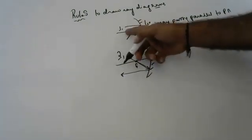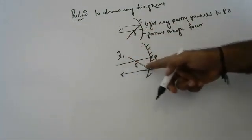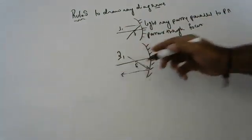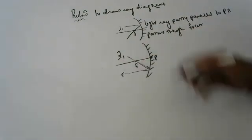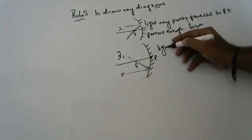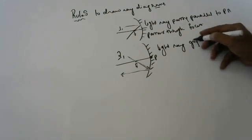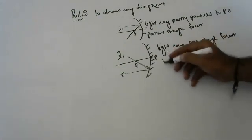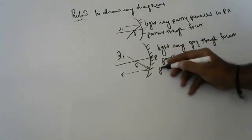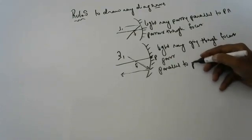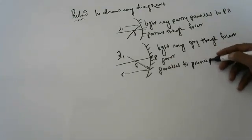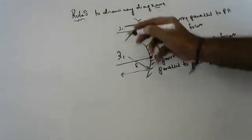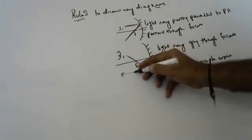If it is parallel, it goes through focus. If it is coming through focus, it goes parallel. So the second rule is: light ray going through focus passes parallel to the principal axis. If it is parallel to the principal axis, it goes through focus. If it is going through focus, it goes parallel to the principal axis.